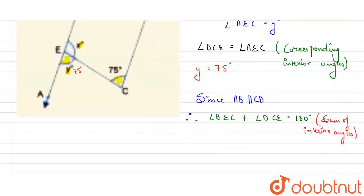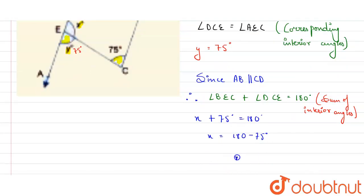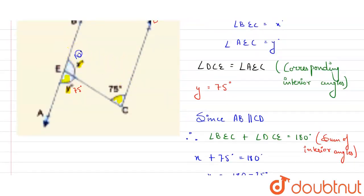So let's put the values here. Angle BEC, that is x degrees, and DCE is 75 degrees, it is equal to 180 degrees. So x will be equal to 180 degrees minus 75 degrees. So from here, value of x will be equal to 105 degrees.